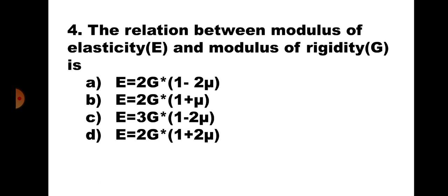Question number 4. The relation between modulus of elasticity E and modulus of rigidity G is: A. E = 2G(1 − 2μ), B. E = 2G(1 + μ), C. E = 3G(1 − 2μ), D. E = 2G(1 + 2μ).